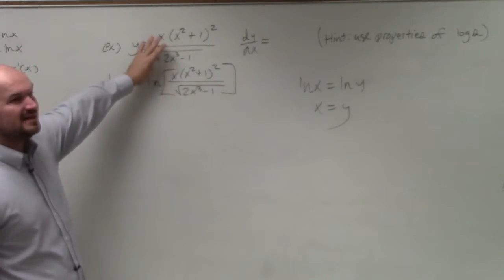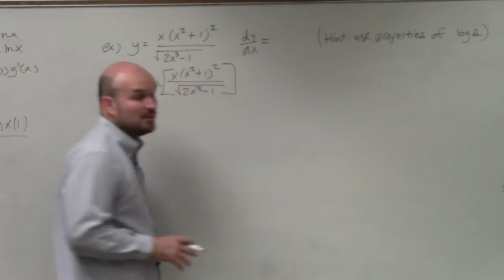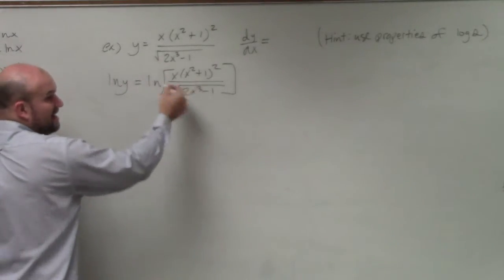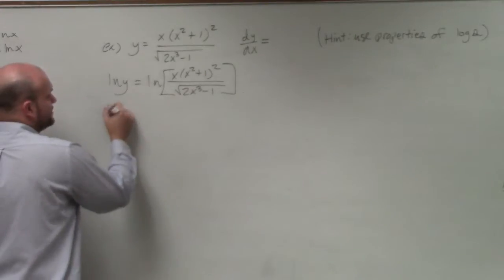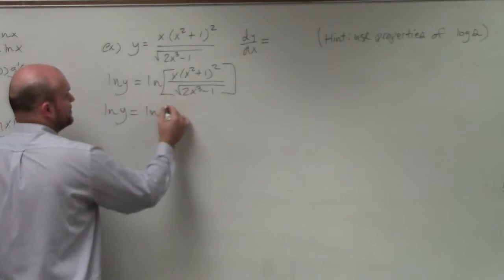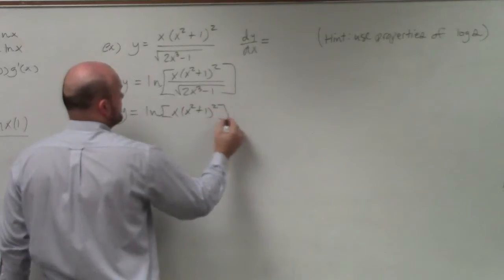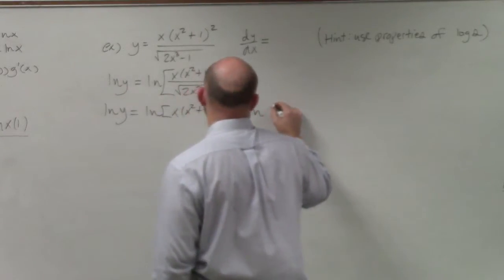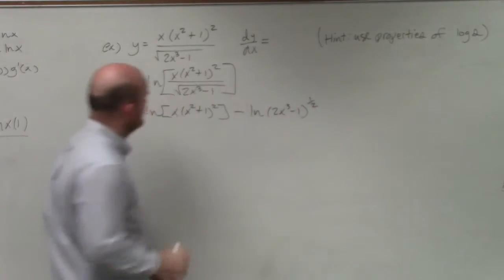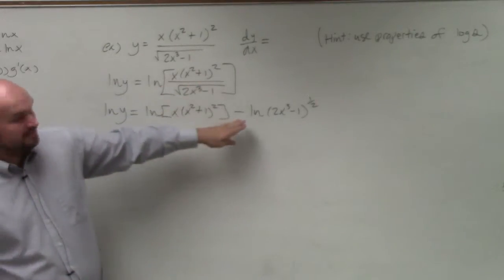Because right now, this right-hand side looks pretty crazy. But what I can do is now, I can use what we did in our homework for expanding logarithmic equations. I can now expand this right side. So the left side is pretty well set. But I can expand this into ln of x times x squared plus 1 squared minus ln of 2x cubed minus 1 raised to the 1 half. Then, you guys can see that I separated the division by taking the subtraction.